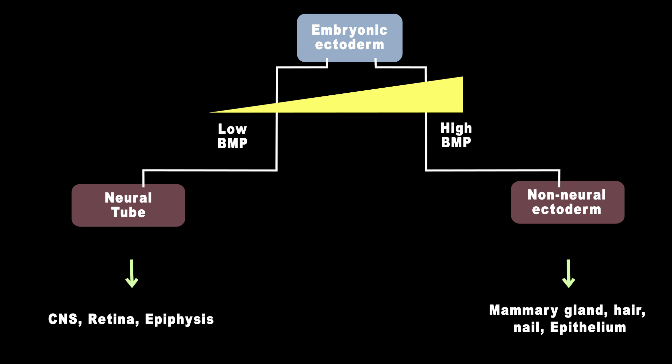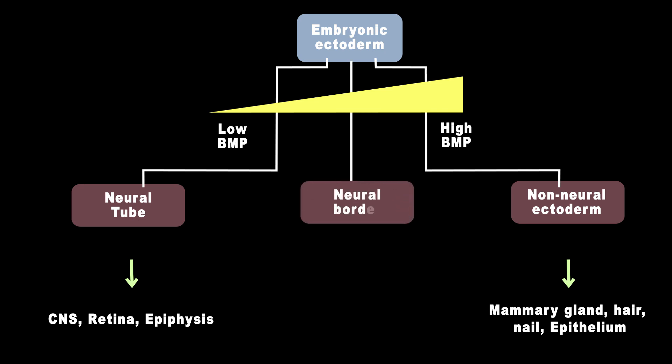Ectodermal cells that are exposed to intermediate levels of BMP develop molecular characteristics that are neither those of the neural plate nor the surface ectoderm. The neural crest is one of these cell populations, which eventually differentiates and gives rise to different structures such as pigment cells, sensory nerves, and Schwann cells.